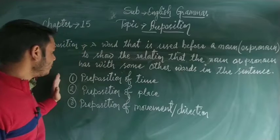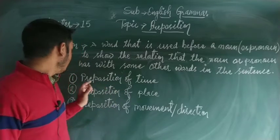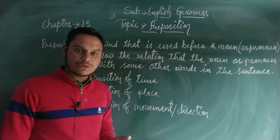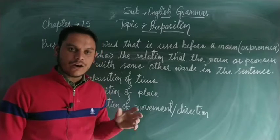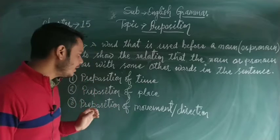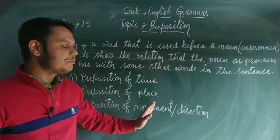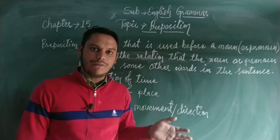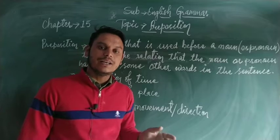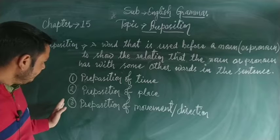There are mainly three kinds of prepositions. First is preposition of time — jo time ke liye use hota hai — such as in, on, at. These are prepositions of time.